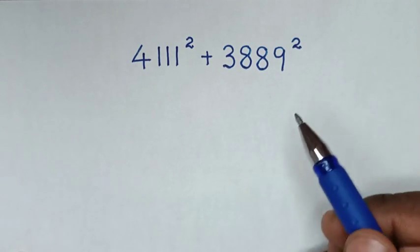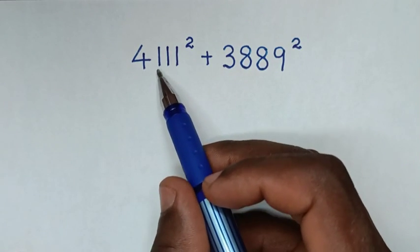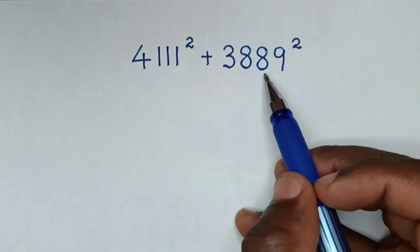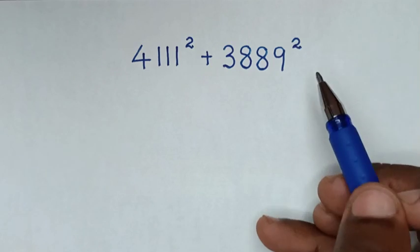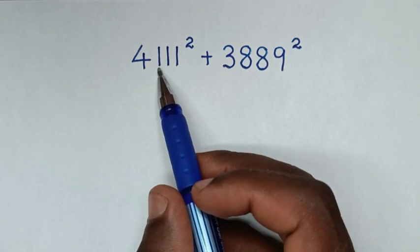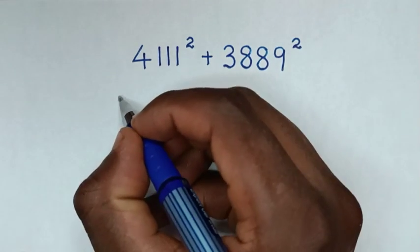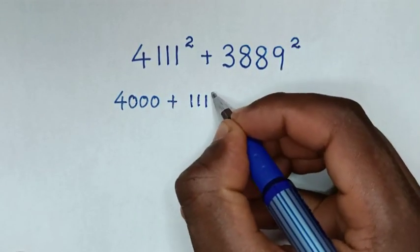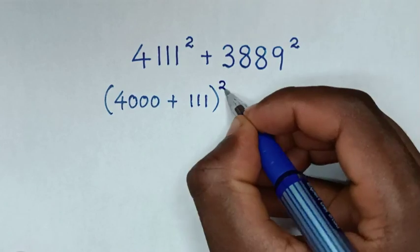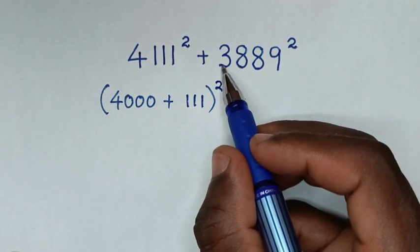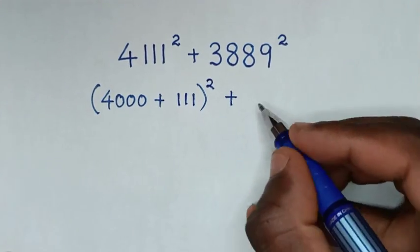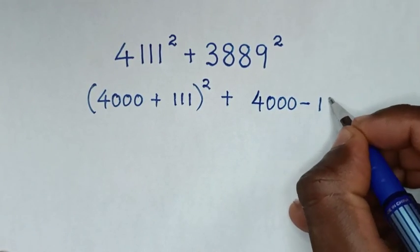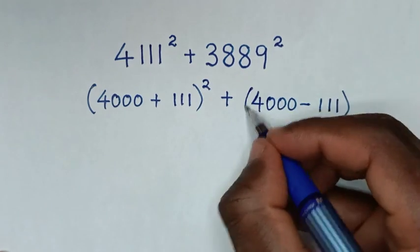Welcome. We are going to solve this math problem: 4111 squared plus 3889 squared. We rewrite 4111 as 4000 plus 111 in brackets, squared, then plus 3889 as 4000 minus 111 in brackets, squared.